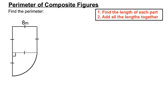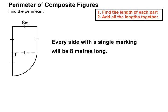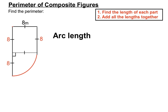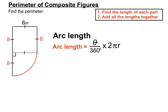Here's another example. Once again we have markings that are the same. Every side with a single marking will be 8m long — the 8m side at the top has a single marking, so every other single-marked side is also 8m. We put all those 8s in. We also have to find an arc length — shown in red — and we've got a quarter of a circle here, so we'll use our arc length formula for that curved part.